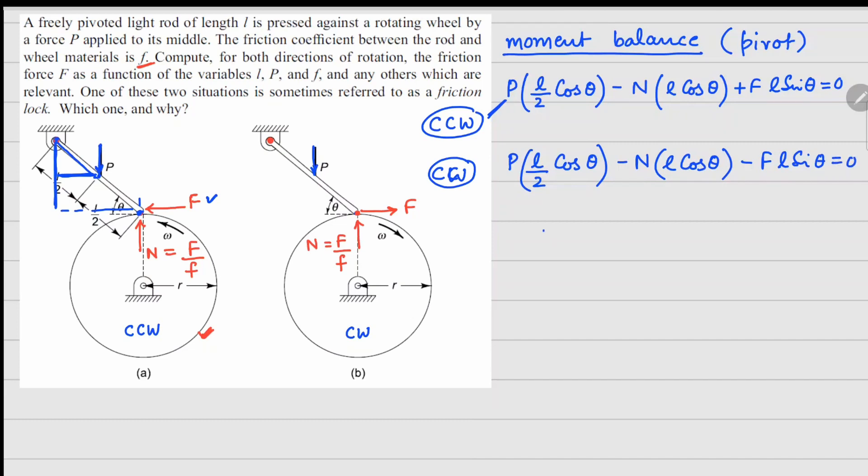Now we can make use of N equals capital F over f, substitute into these equations, and if you solve, we can find out the value of your friction force F for the counterclockwise case, and this will be P times f, and if you simplify, this comes out to be 2 times (1 minus f tan theta).